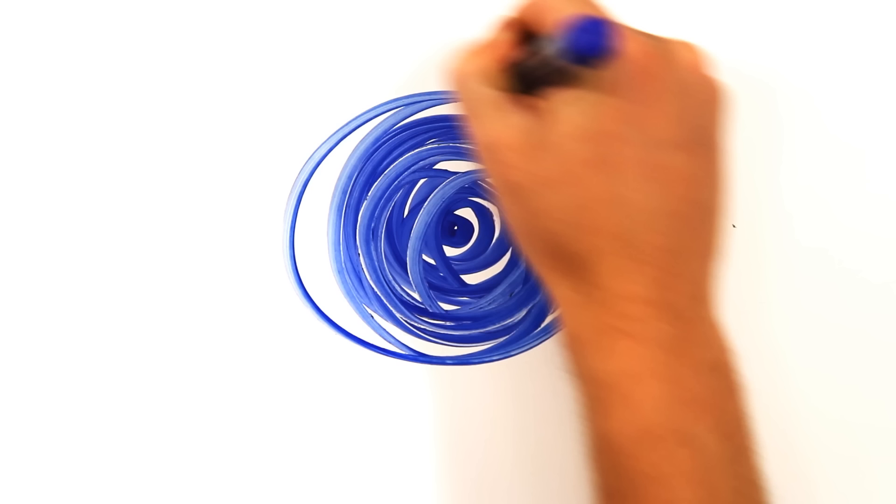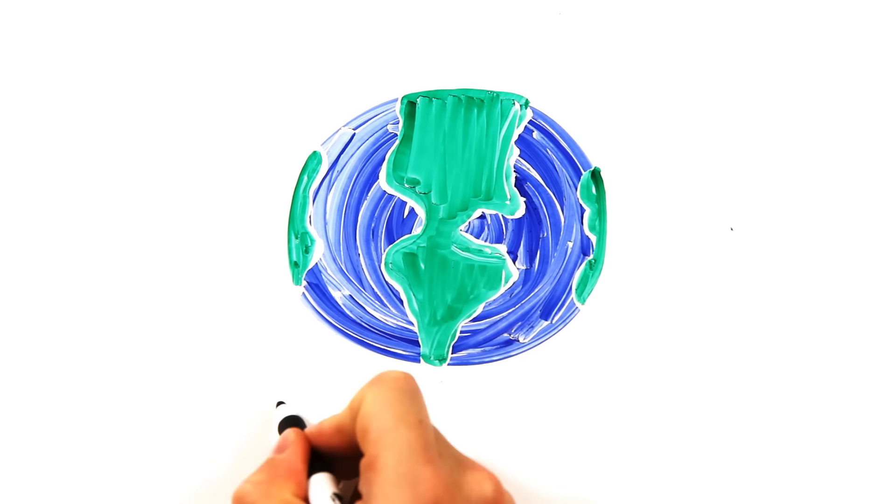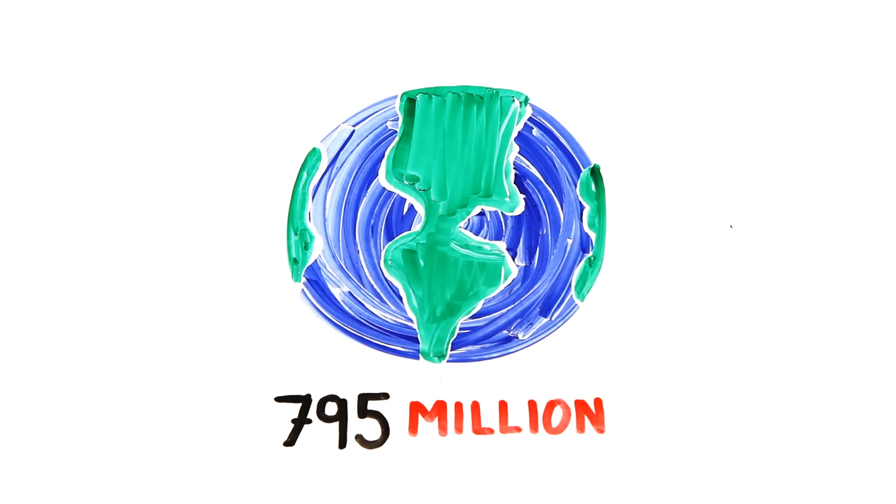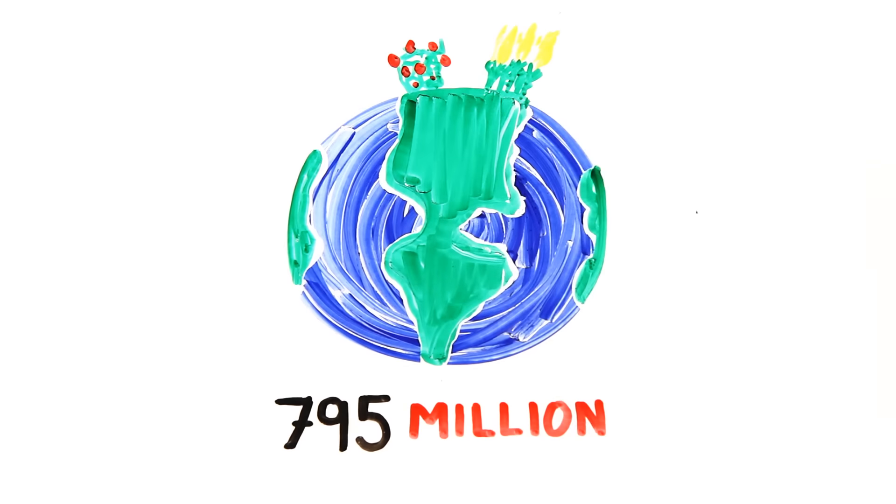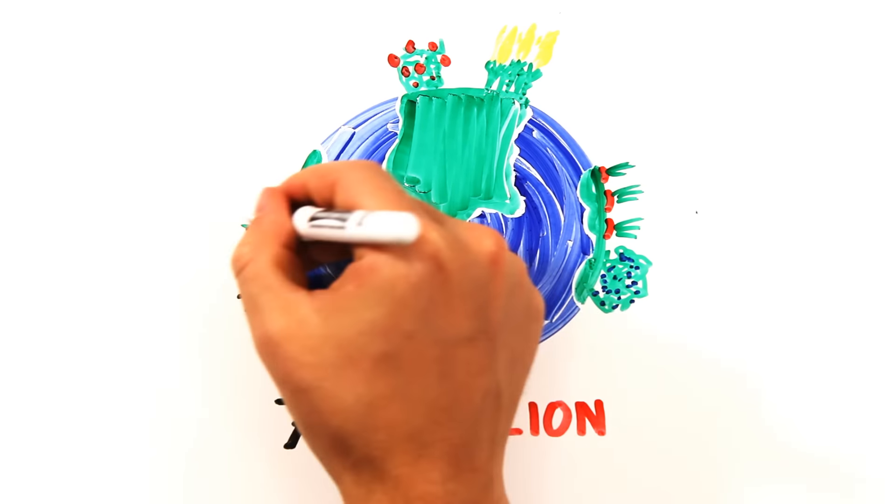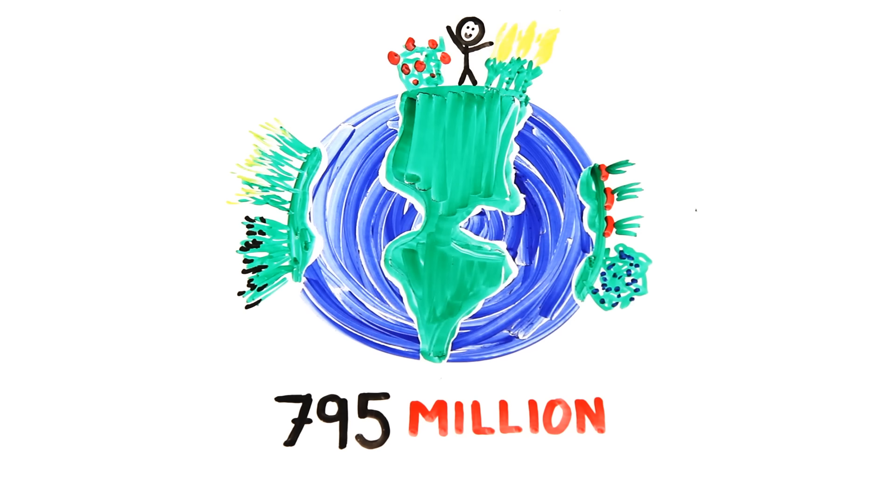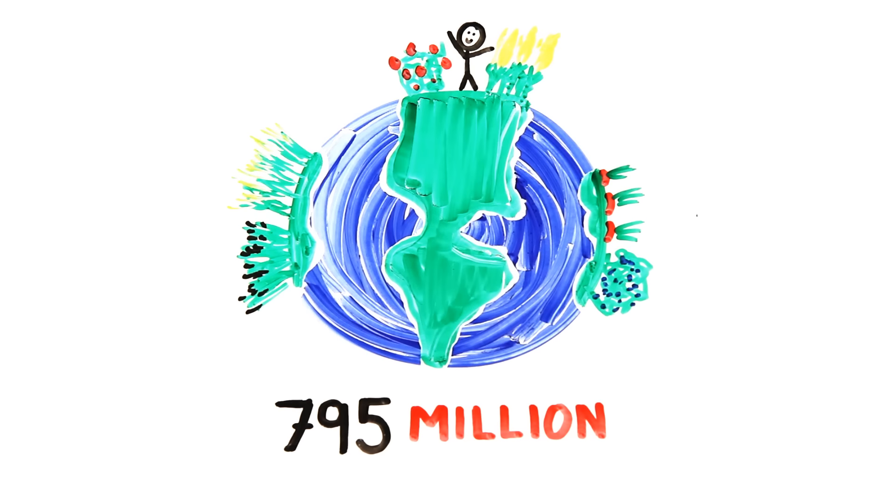And yet, approximately 795 million people around the world have to deal with this reality. The good news is that the seven richest countries have pledged to lift 500 million people out of hunger and malnutrition by 2030, but we need to hold them accountable.